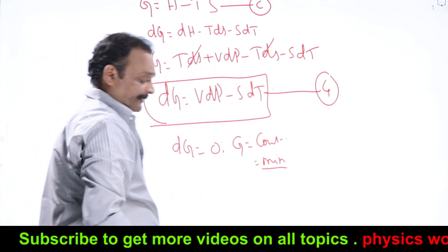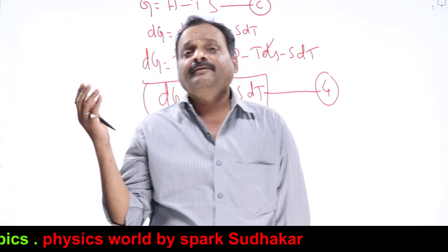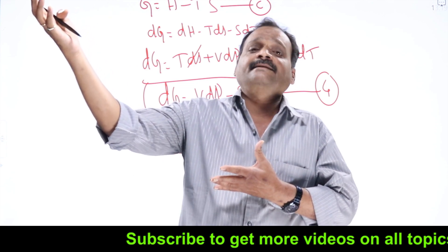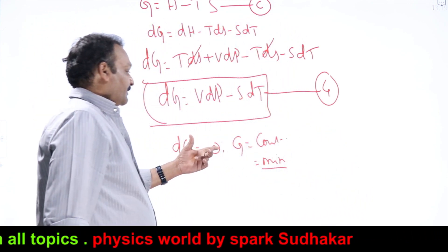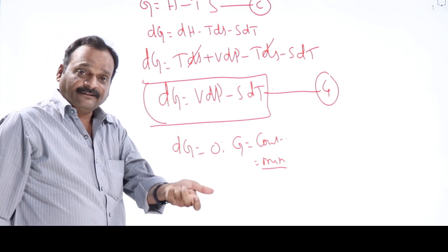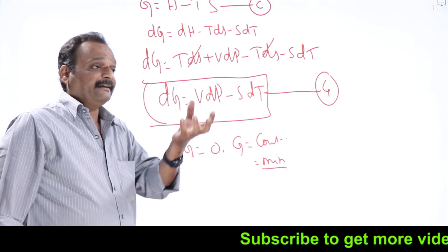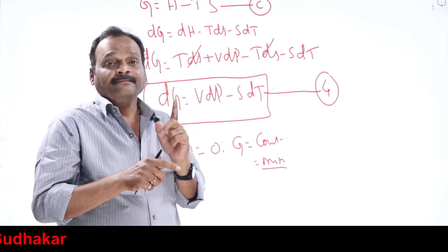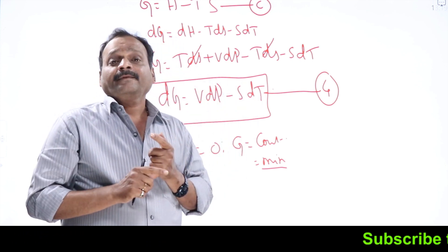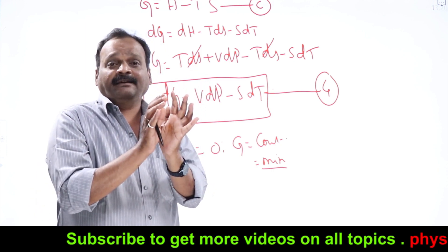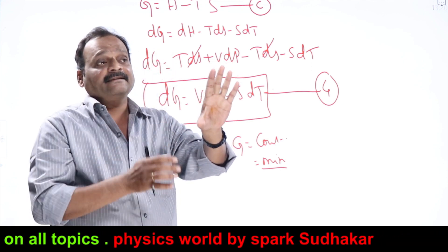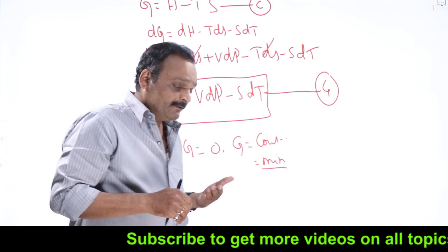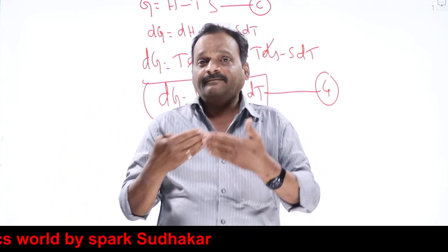G equals H minus TS. These are called first order phase transitions — during first order phase changes, first order derivatives of Gibbs potential remain constant or minimum, which is why they are known as first order phase changes. G per molecule, once we go into statistical mechanics, gives what is called chemical potential. These are the foundations for what we will study in statistical mechanics in future. So, these are the four thermodynamic potentials — nothing but energy functions — giving us the heat content and work values present in the system in specific processes. From here onwards, we will go into what is known as Maxwell's equations in thermodynamics, which we'll see in the next video. Thank you.